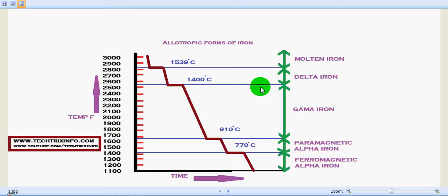Hi, good morning. Today we'll be learning about the allotropic forms of iron with the help of the graph shown on the screen. On this graph, we have plotted the different temperatures on the y-axis and time on the x-axis. The different forms of iron are also mentioned.